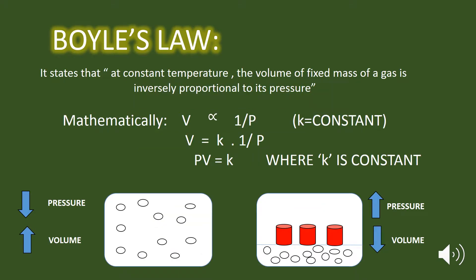Boyle's law states that at a constant temperature, the volume of a fixed mass of a gas is inversely proportional to its pressure. It means that if the temperature is kept constant and the mass of a gas is constant, then the volume is inversely proportional to its pressure.